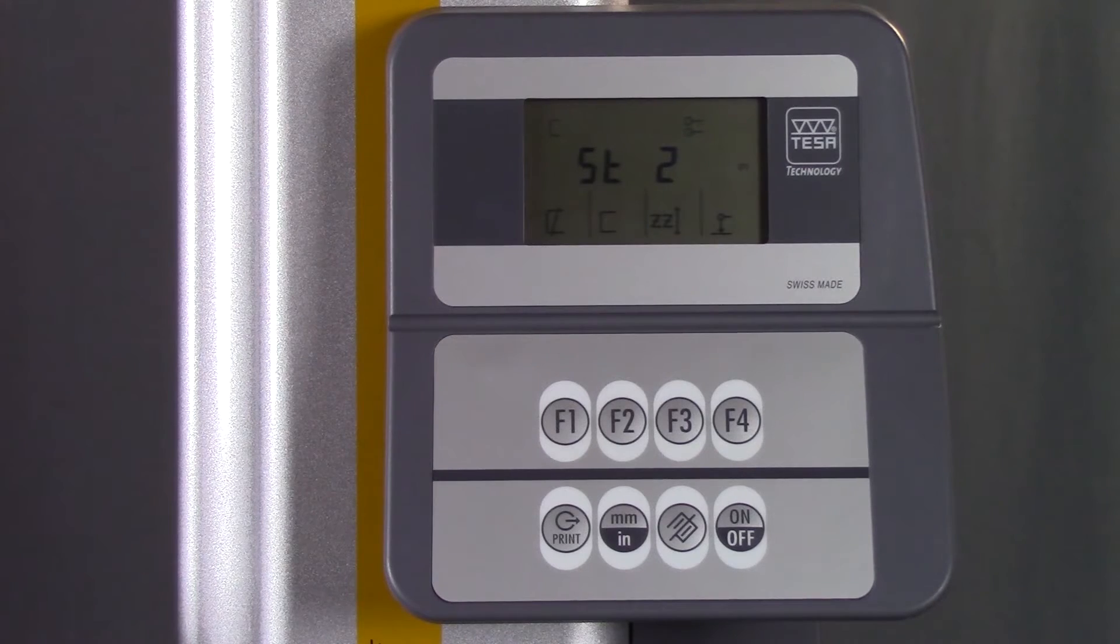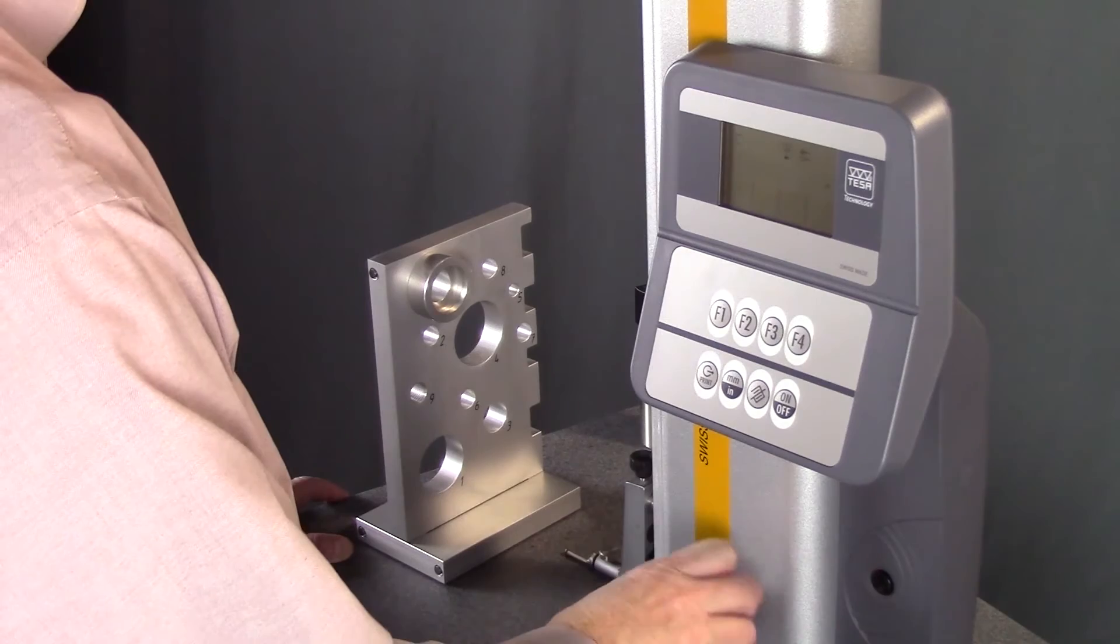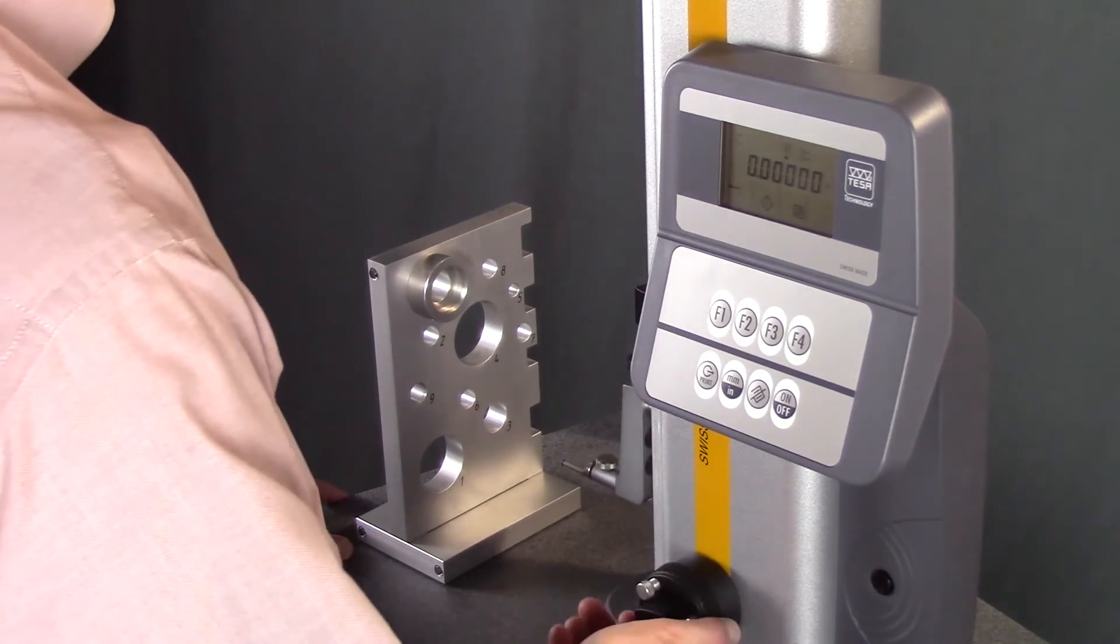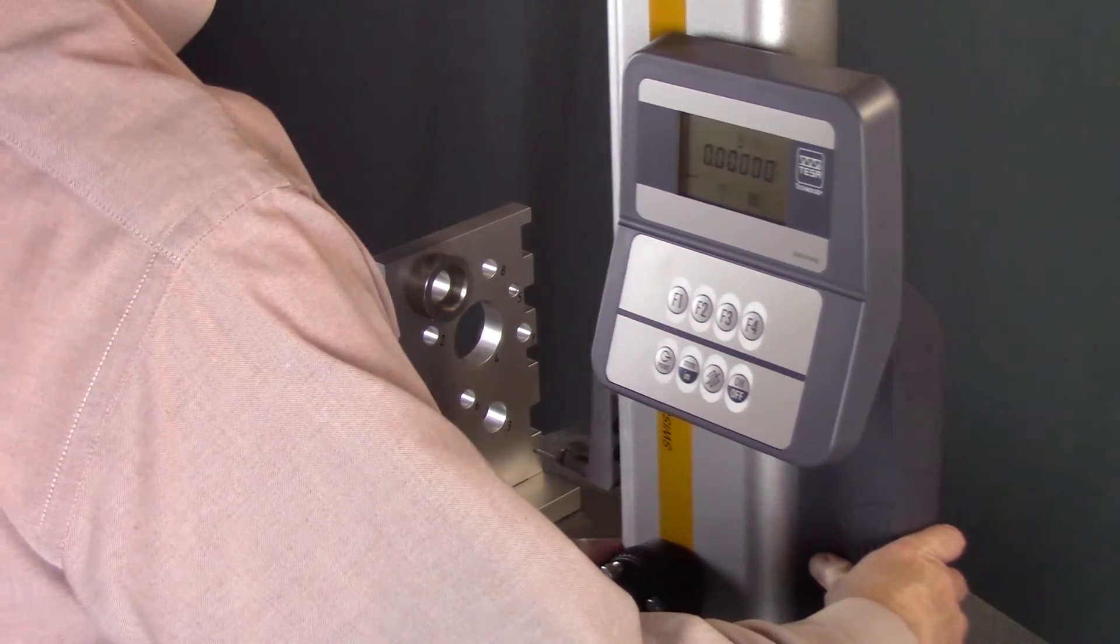From start two mode, you establish your datum point by making contact with the surface twice. After the second beep, the display will read zero and you are ready to measure.